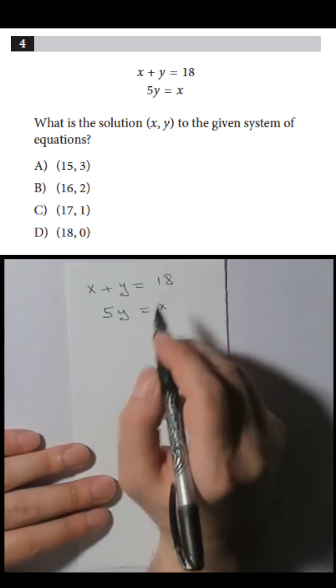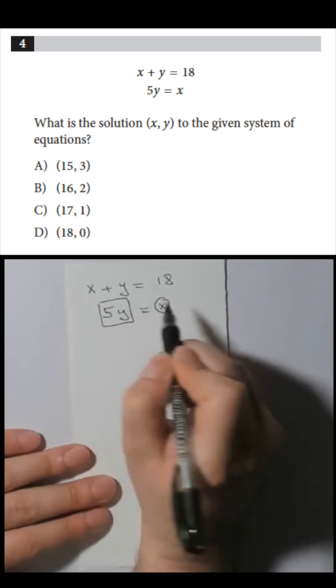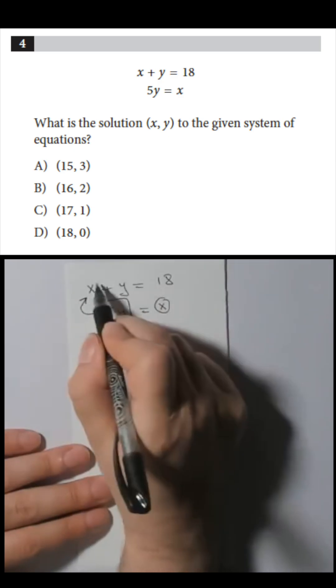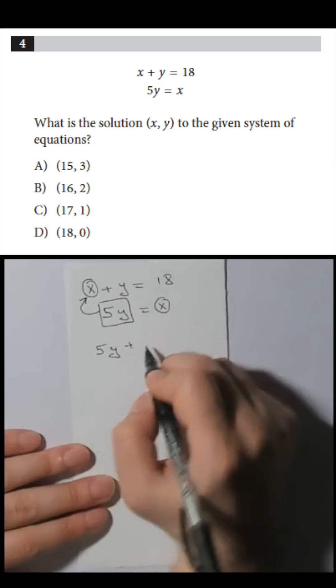Notice the second equation is just an expression of x in terms of y: x equals 5y. So replace x in the first equation by 5y. You'll get 5y plus y equals 18.